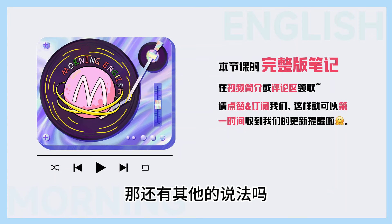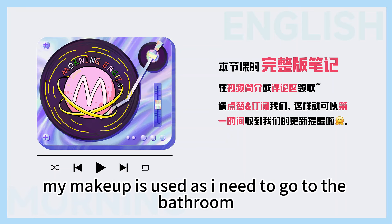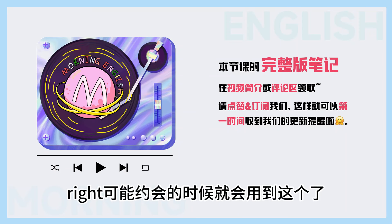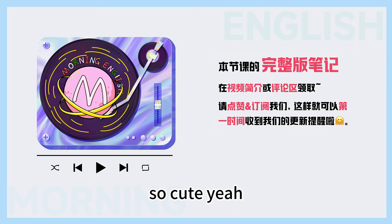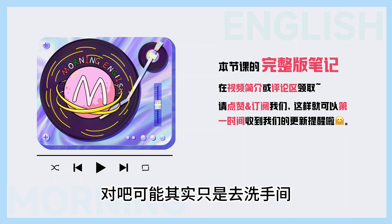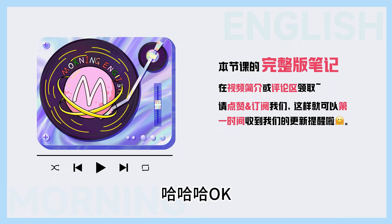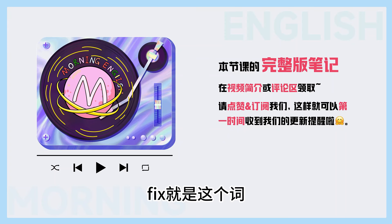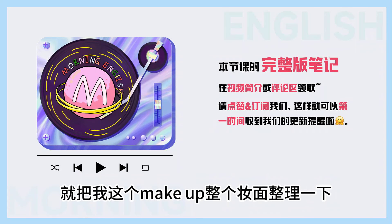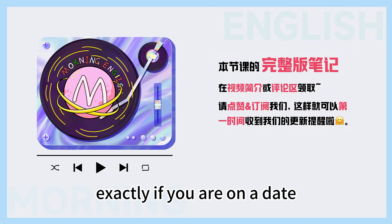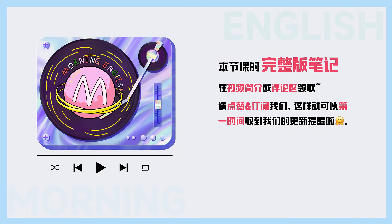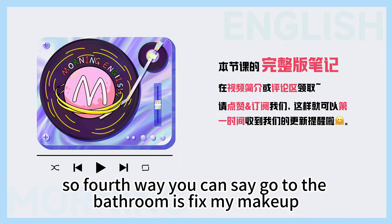I need to go to the ladies' room. 那还有其他的说法吗? 'I need to go fix my makeup' is used as 'I need to go to the bathroom.' So it would just be said to your date, right? 可能约会的时候就会用到这个了. 'I need to go fix my makeup.' So cute, so ladylike. 就是我要去补个妆，补个妆不就是去洗手间吗？Fix 作为动词就是整理、收拾的意思，so 'fix my makeup' 就是把妆面整理一下，就是补妆了. The fourth way you can say go to the bathroom is 'fix my makeup.' If you are on a date and want to be cute, you wouldn't say 'I need to go take a leak.'